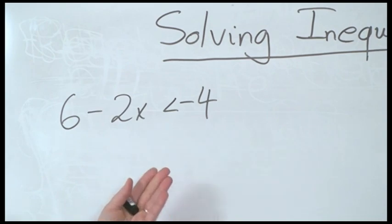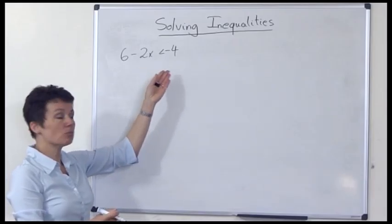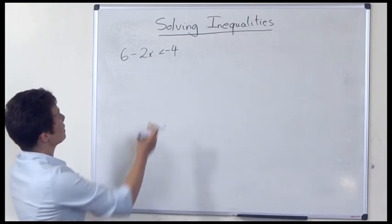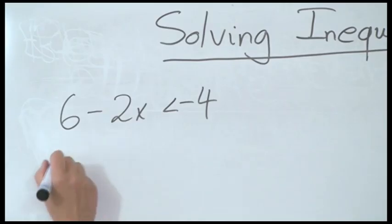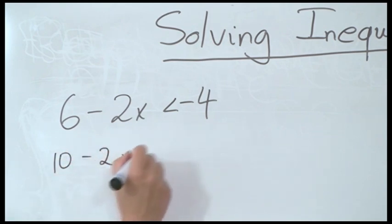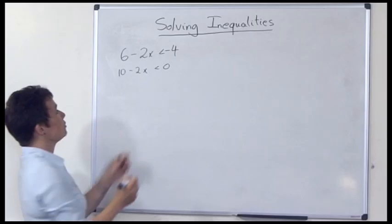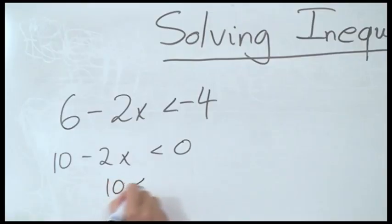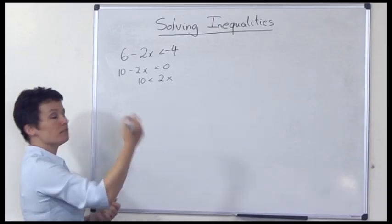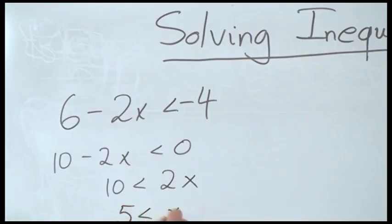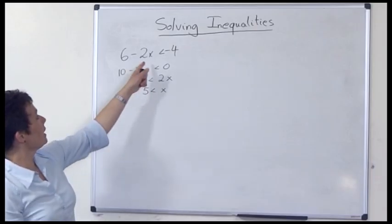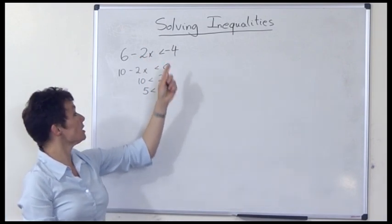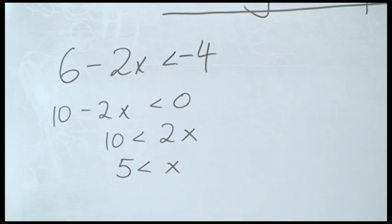We apply operations to both sides of the inequality with the aim of isolating x. In this case you would, for example, add 4 on both sides — you get 10 minus 2x less than 0. Then you would add 2x on both sides and get 10 less than 2x. Then you would divide by 2 and get 5 less than x. So we see that all x satisfying this inequality are exactly those x which are greater than 5.